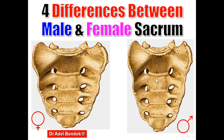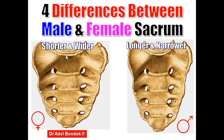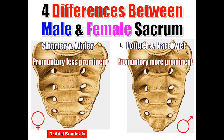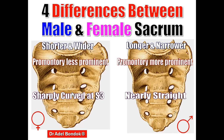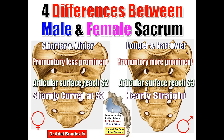There are four main differences between male and female sacrum. The female sacrum is shorter and wider, while the male is longer and narrower. The promontory is less prominent in the female and more prominent in the male. The female sacrum is sharply curved at S3, while the male sacrum is nearly straight. The articular surface in the female reaches S2 and in the male reaches S3.